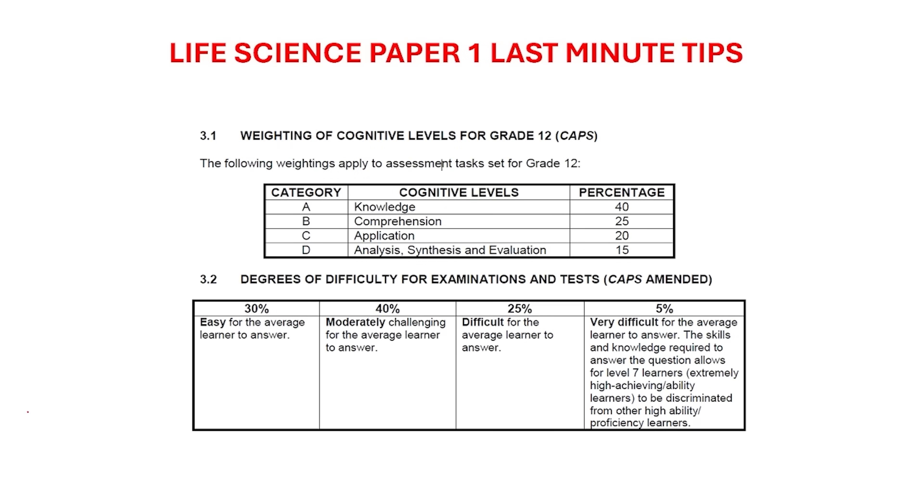Hi guys, today we'll be looking at some Life Science Paper 1 last minute tips. Firstly, let's go through the breakdown of the paper and how it is composed. This is from the official government document. There are four different categories: Category A is knowledge, it's you either know it or you don't know it, it's straight information that consists of 40% of the paper. Comprehension, meaning reading it and understanding what they want from you and then giving your answer, would be 25% of the paper. Application, being when they give you a scenario and they ask you to apply one of the concepts in order to give the results of the scenario, that's 25% of the paper.